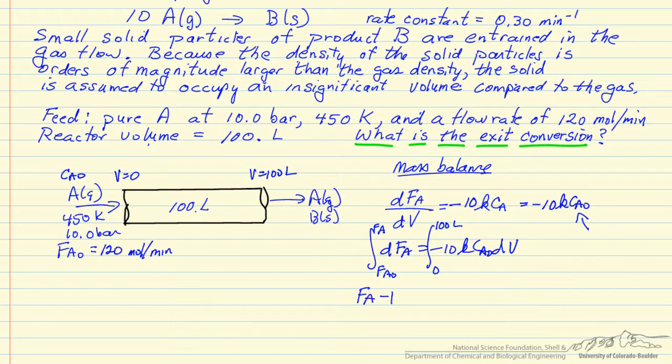So this is just Fa minus Fa0 when we substitute the limits. And this is minus 10k Ca0 times 100 liters.